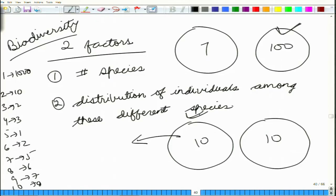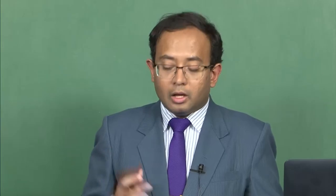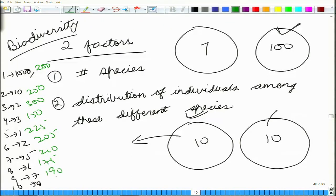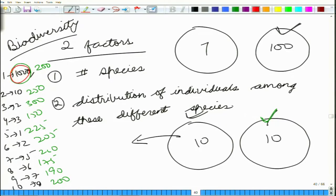In the first community, species 1 is so abundant that wherever you go, you will only find species 1. In the second community all species have a roughly equal numerical abundance, so wherever you go you find a representation of all species. The more is the amount of dominance — the higher the relative abundance of one species — the lesser is the biodiversity.